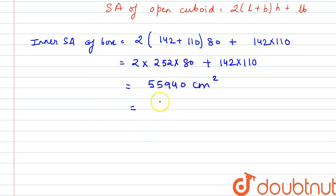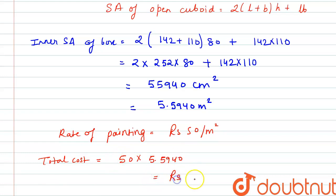Or we can also write this as 5.5940 meter square. And it is given to us that the rate of painting is Rs. 50 per meter square. So the total cost will be 50 multiplied by 5.5940. So the total cost comes out to be Rs. 279.70. So this is our final answer to the question. Thank you.